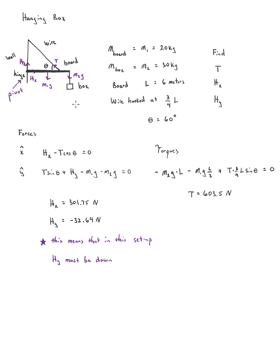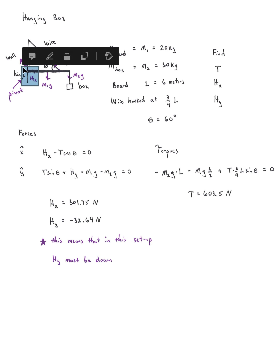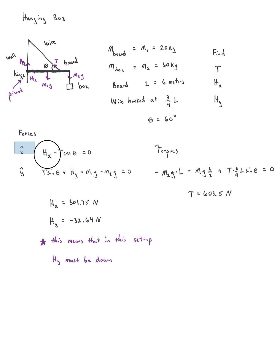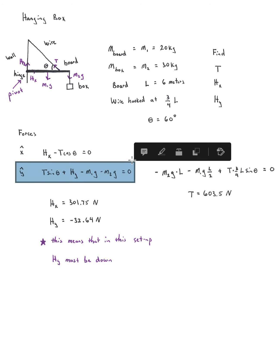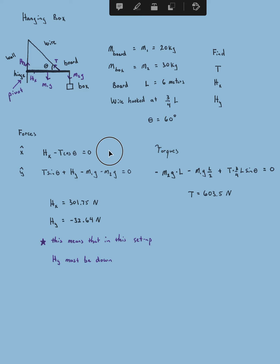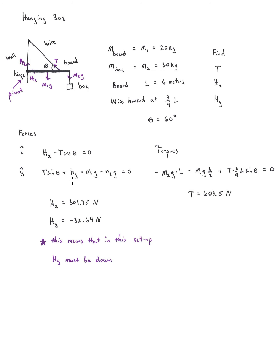First, we always want to identify the forces acting on this system. HY is going to be up, HX is to the right, the weight of the board is down coming from the center of the board, the tension is going up and left, and the weight of the box is going down. For the X direction: HX minus T cosine theta equals zero. For the Y direction: T sine theta plus HY minus the weight of the board minus the weight of the box equals zero. We can't solve yet because we have three variables and two equations.